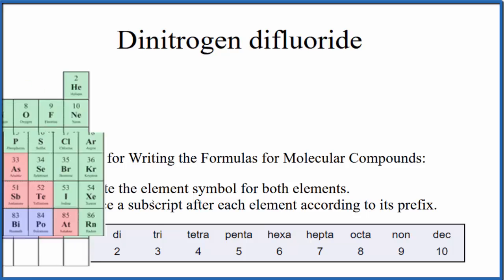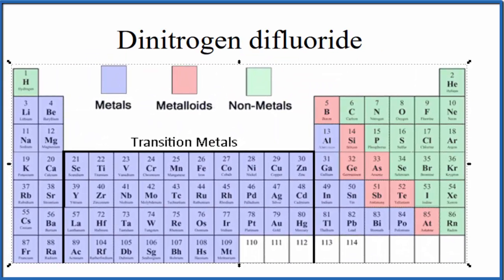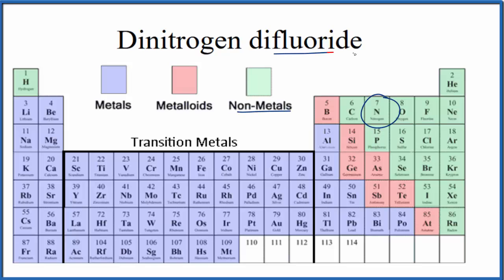If we look at the periodic table, we can see that nitrogen, that's a nonmetal, and then we have fluoride, that's fluorine, that's also a nonmetal.